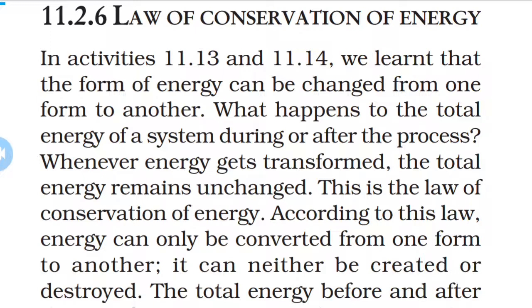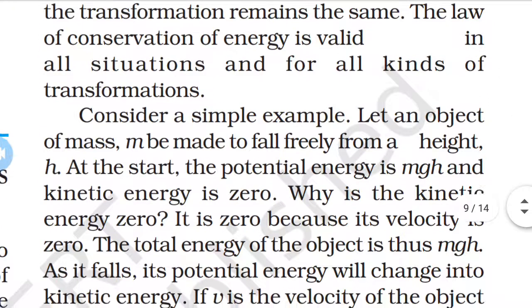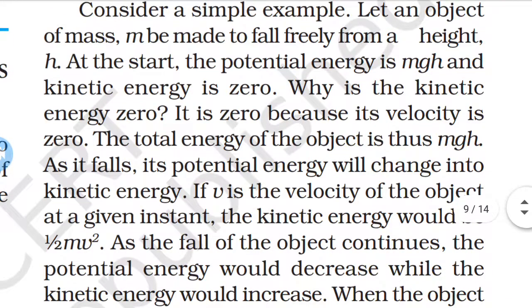Now we consider one example. Let an object of mass m be made to fall freely from height h. At the start, the potential energy is mgh and kinetic energy is zero. Kinetic energy is zero because its velocity is zero. The total energy of the object is mgh here.